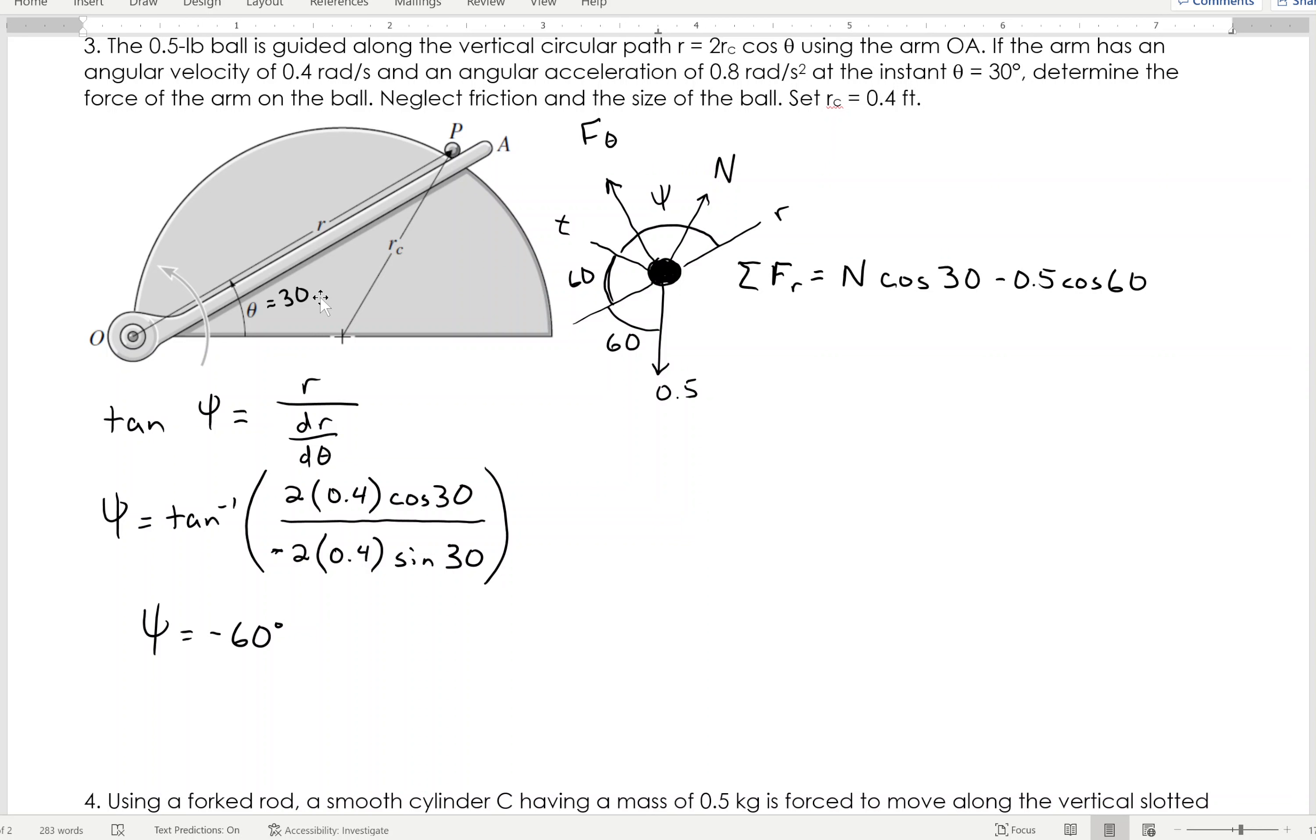And I get that from this angle right here. Again, different 60, that's based on the fact that this is 30 relative to the horizontal, so it's 60 relative to the vertical, and I get that. And then, what that equals is the mass, which is 0.5 divided by 32.2 times the acceleration in the R direction, which we're going to have to find in a second.